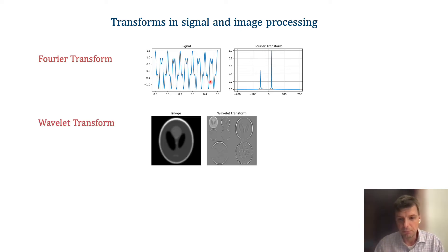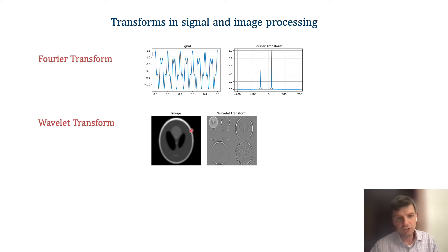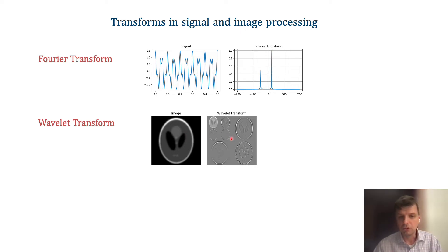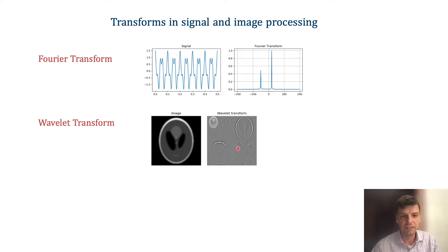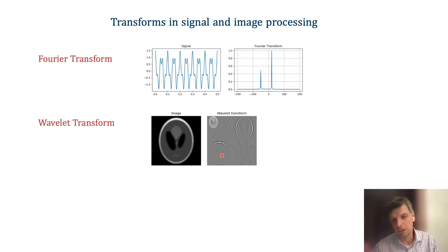Another such transform many of us are familiar with is the wavelet transform for 1D signals and 2D images, where an image — in this case a medical imaging phantom — can be transformed into a wavelet domain. This is a description that combines a low-pass or low-resolution version of the image with the edge information necessary to reconstruct it. Again, this is a two-way operation: we can take the image from its native domain into transform domain, do some processing, and invert back to image domain.